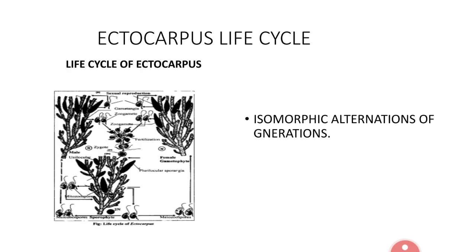If you observe the Ectocarpus life cycle, there are two different stages: the sporophyte dominant stage and the gametophyte stage. Both are similar in morphology and they alternate repeatedly one after the other. Such a type of life cycle is called isomorphic alternation of generations.